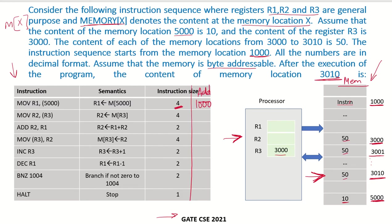The size of this instruction is 4 bytes, so the next instruction is at address 1004. That instruction is also 4 bytes, so next is at 1008. Then 2 bytes, putting the next at 1010; then 4 bytes at 1014; 2 bytes at 1016; 2 bytes at 1018; and 2 bytes at 1020. So the last instruction HALT is at address 1020.